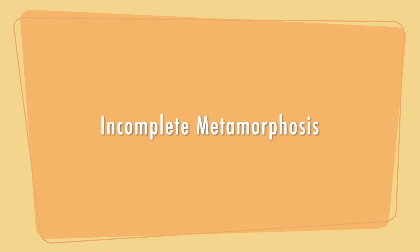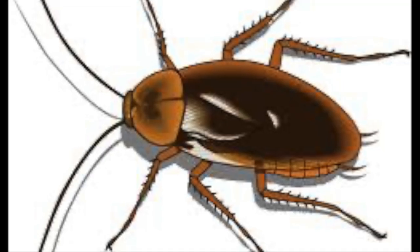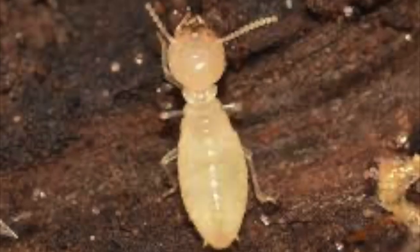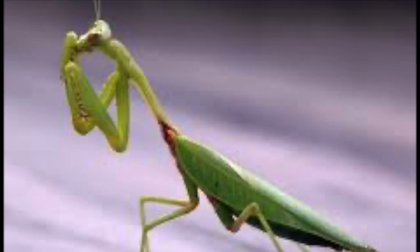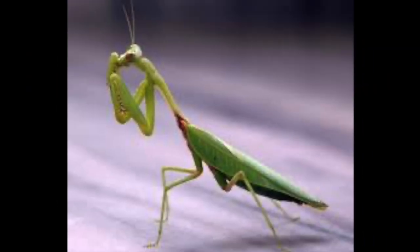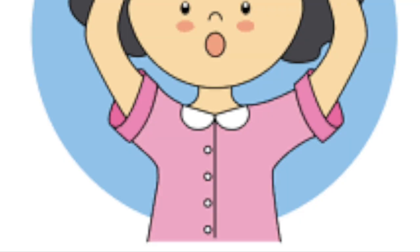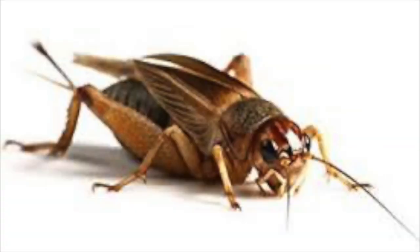Some insects undergo incomplete metamorphosis, including cockroaches, termites, praying mantises, crickets, and lice. This type of life cycle also begins with an adult insect that lays eggs to hatch into a form of insect called a nymph.